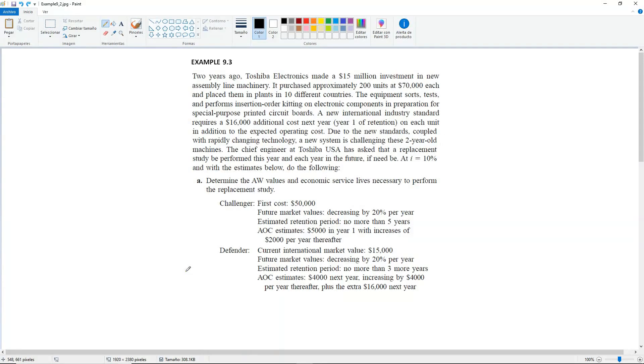Example 9.3. Two years ago, Toshiba Electronics made a $15 million investment in new assembly line machinery. It purchased approximately 200 units at $70,000 each and placed them in plants in 10 different countries. The equipment sorts, tests, and performs insertion order kitting on electronic components in preparation for special purpose printed circuit boards.